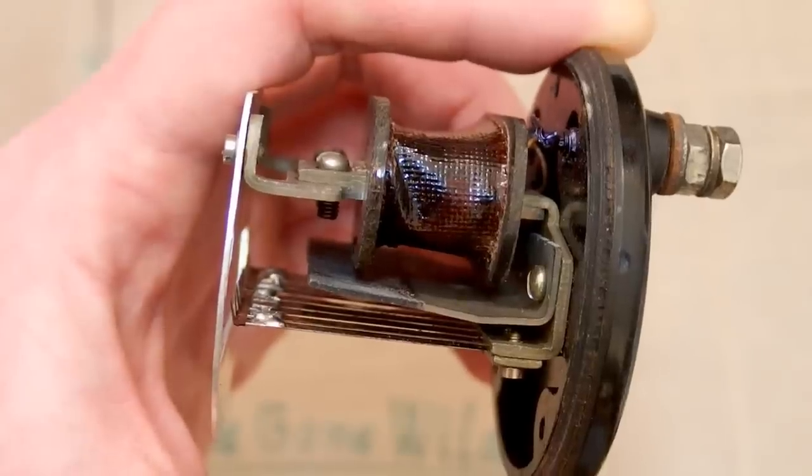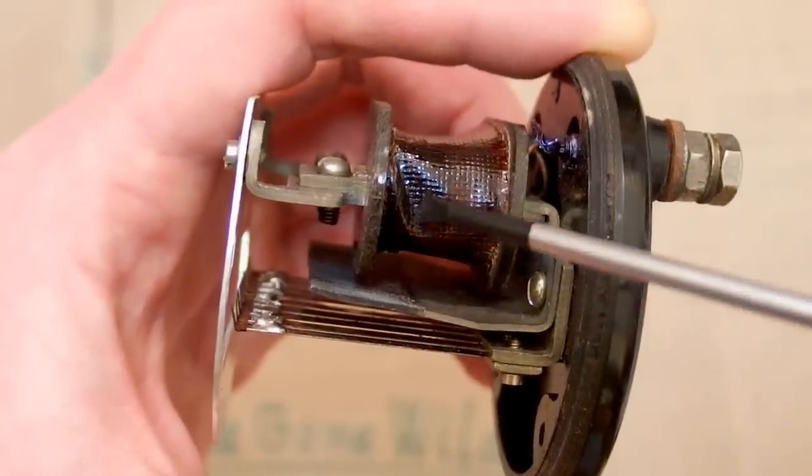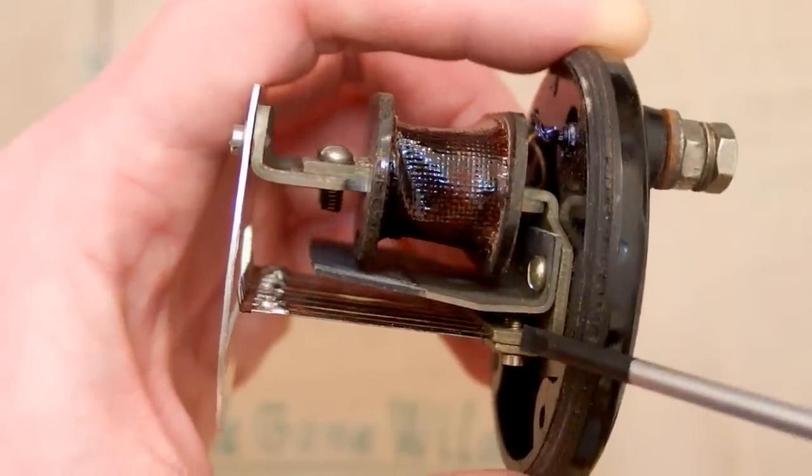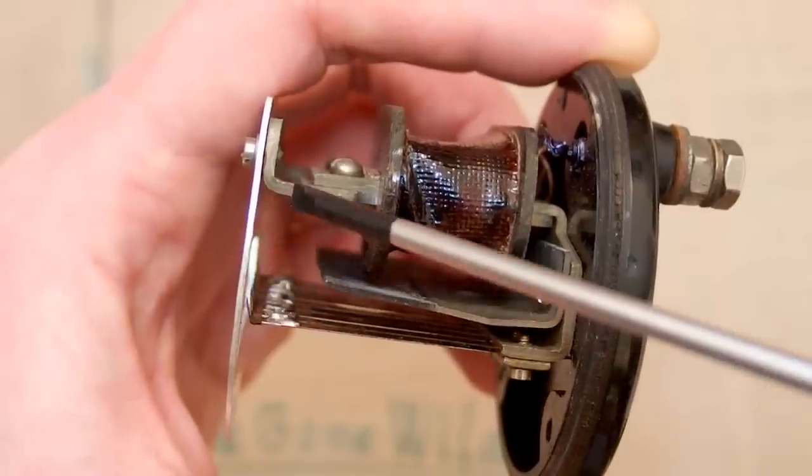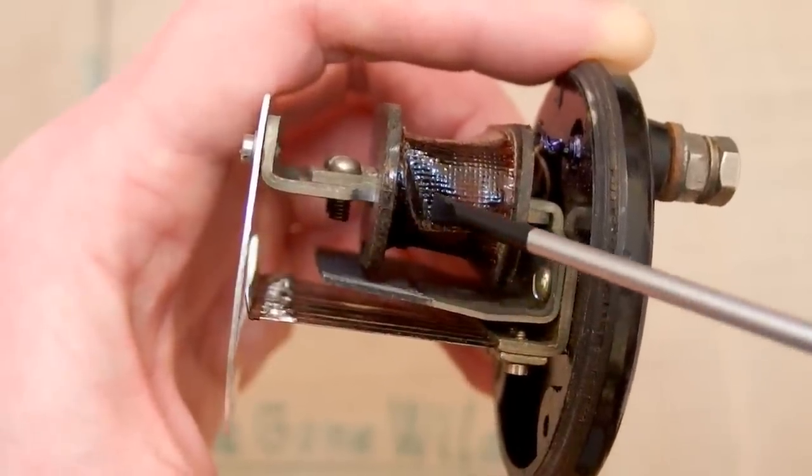And of course the magnetic field has to make a full circle from the coil through those reeds through this or this back into the coil.